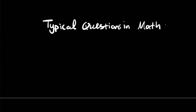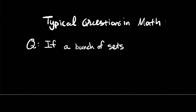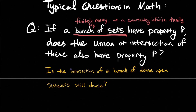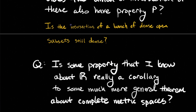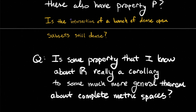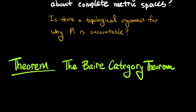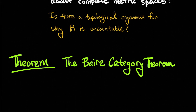Some typical questions in math: if you have a countably infinite family of sets that all have property P, does the union or intersection also have property P? Concretely, is the intersection of a bunch of dense open subsets still dense? Also, is a known property of the real numbers actually a corollary of a more general theorem about complete metric spaces — for instance, is there a topological argument for why the real numbers are uncountable? The answer will come from the Baire Category Theorem for complete metric spaces.